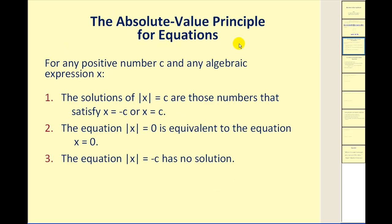Let's talk about the absolute value principle for equations. For any positive number c and any algebraic expression x, the solutions of the absolute value of x equal to c are those numbers that satisfy x equals negative c or x equals positive c. Remember, we're using x here, but this could be any expression involving x. If we have the absolute value of x equal to zero, this is equivalent to the equation x equals zero, because positive zero and negative zero both result in zero.